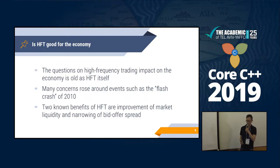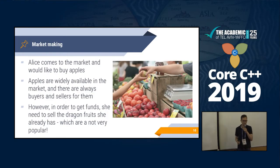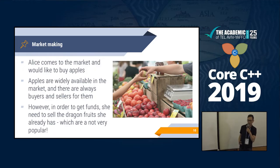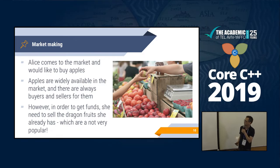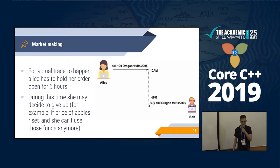Another thing algo trading does is add liquidity to the market. Here's a simple example called market making: let's assume Alice wants to buy apples. Apples are readily available in the market, but she doesn't have funds — she needs to sell something first. She has dragon fruits, but not a lot of people want to buy dragon fruits, so basically she doesn't have a buyer. She can wait, and maybe six hours later Bob will come in and buy those dragon fruits.